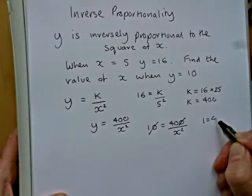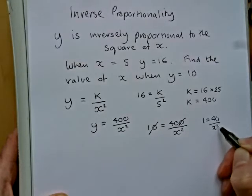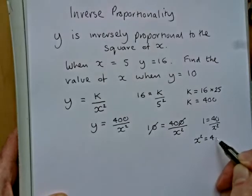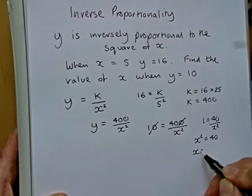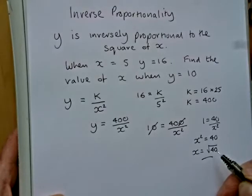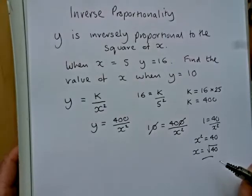So, if I do it that way, 1 equals 40 over x squared. So, x squared equals 40. So, x will equal the square root of 40, and we can leave the answer like that.